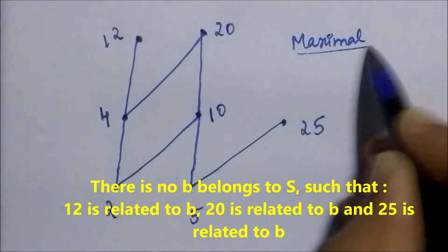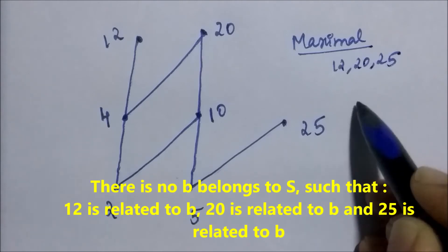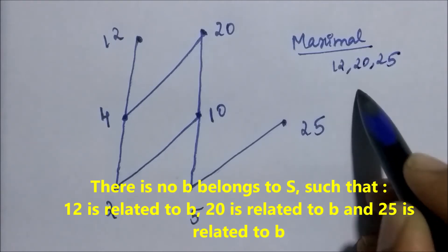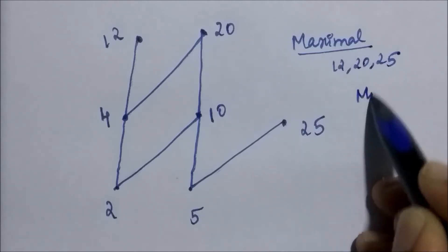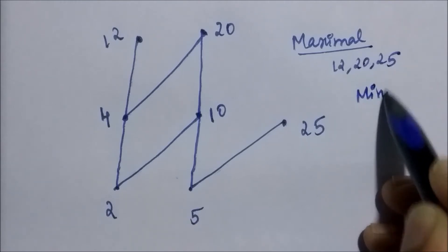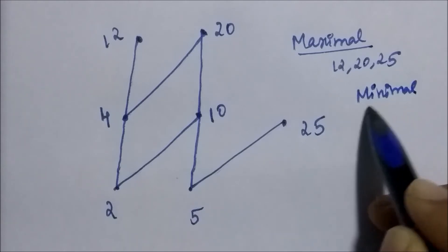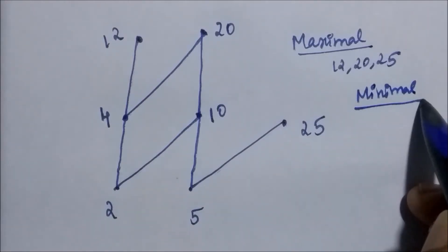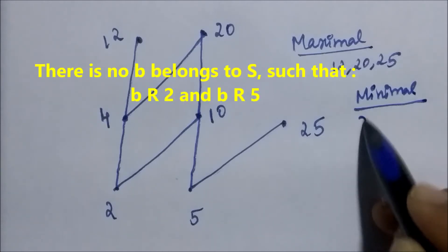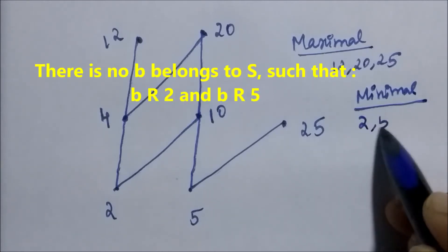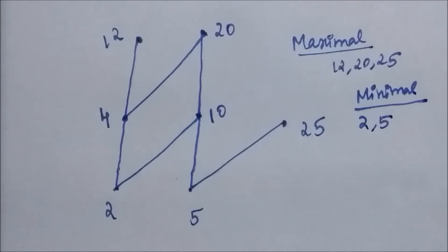The elements 12, 20, and 25 are the maximal elements. There is no element b belonging to set S such that 12 is related to b, 20 is related to b, or 25 is related to b. The minimal elements are 2 and 5 because there is no b in S such that b is related to 2 or b is related to 5.